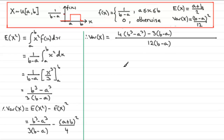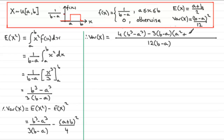We then multiply by a plus b all squared. Rather than leave it as a plus b all squared, I'll expand it: a plus b all squared equals a squared plus 2ab plus b squared.